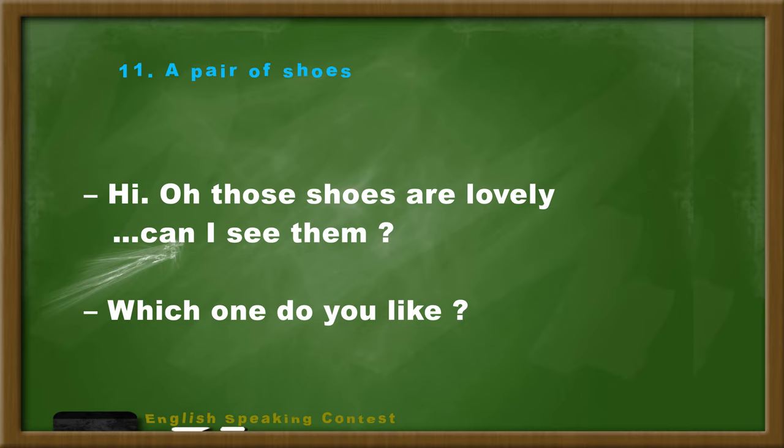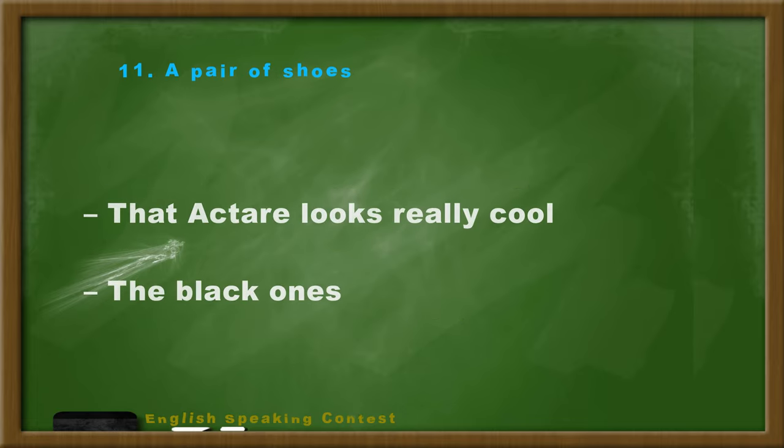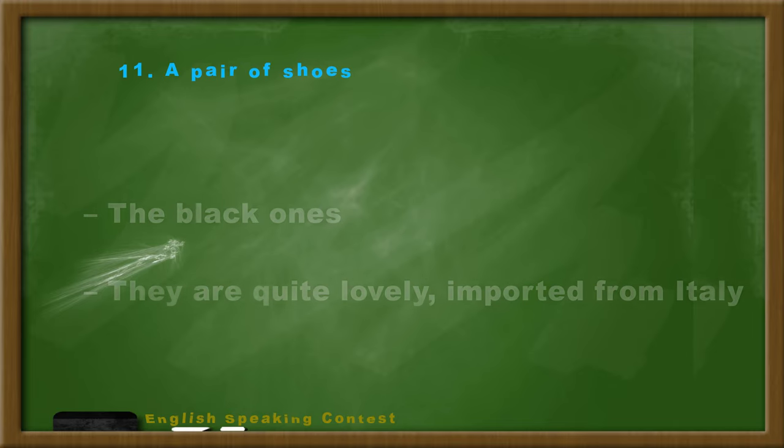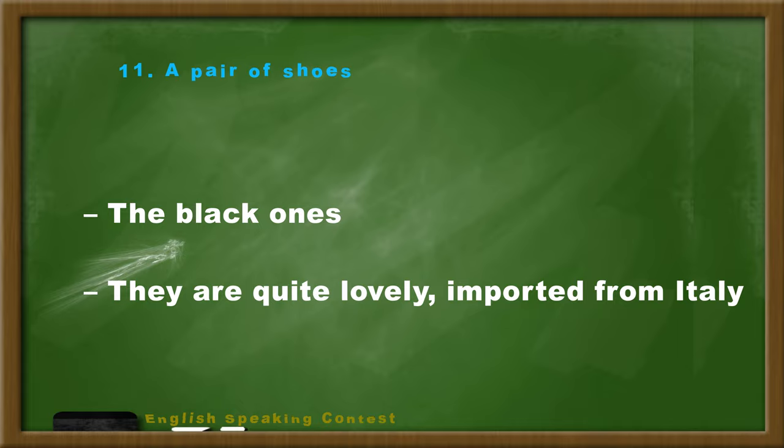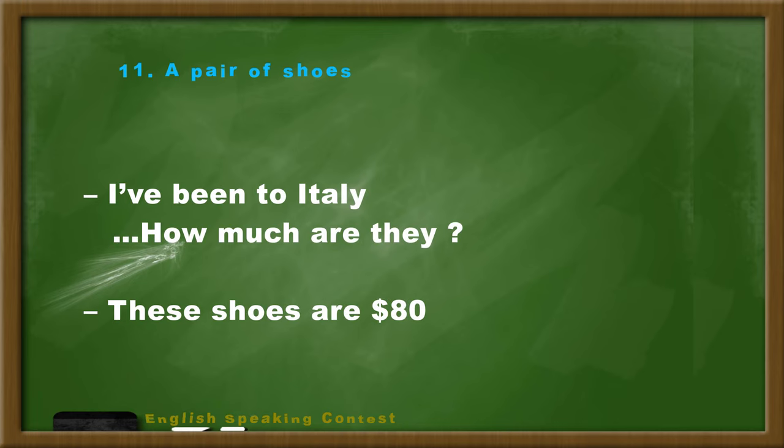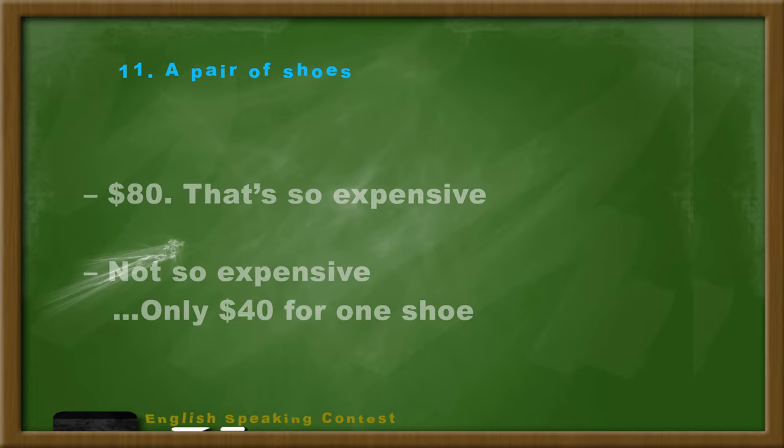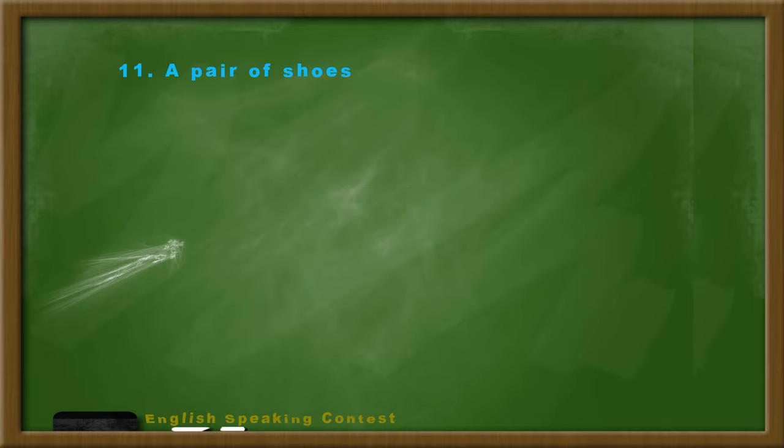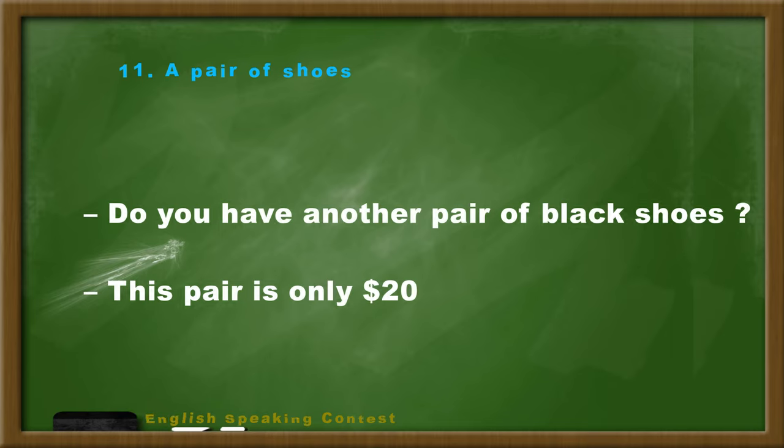Hi. Oh, those shoes are lovely. Can I see them? Which ones do you like? That black pair looks really cool. The black ones, here. The black ones, they're quite lovely. Imported from Italy. I've been to Italy. How much are they? These shoes are $80. $80? That's so expensive. Not so expensive, only $40 for one shoe.